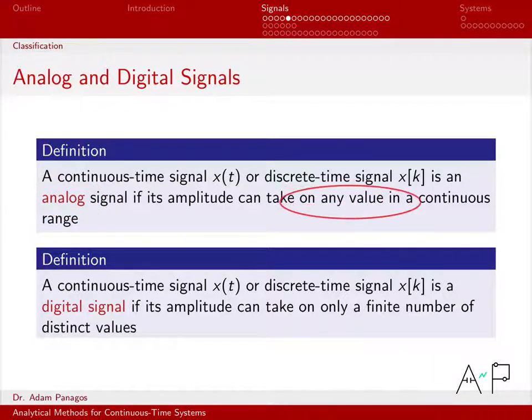I can tell if it's an analog signal if the amplitude can take on any value in some continuous range. Usually when I draw continuous-time signals, they are analog because I draw this wavy quantity, and as it moves around, the values the signal takes on actually takes on all values on some interval on the vertical axis.